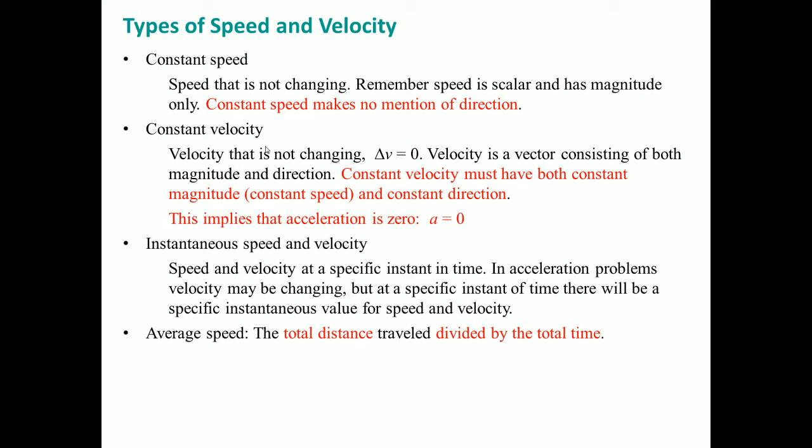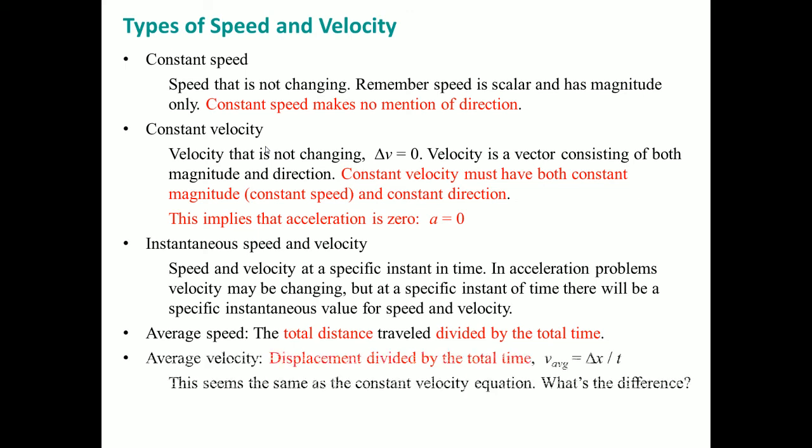Sometimes we have average speed. Average speed is just your total distance divided by your total time. Average velocity can be seen as displacement divided by total time.